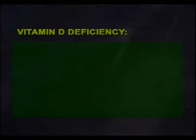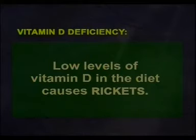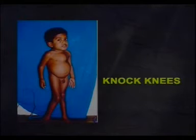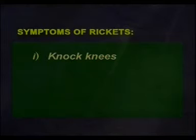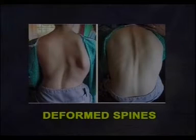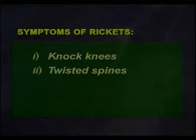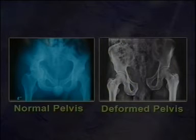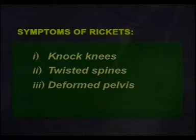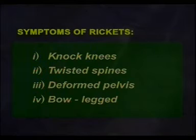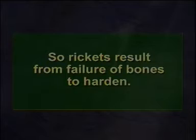Vitamin D deficiency. Low levels of vitamin D in the diet cause rickets. Symptoms of rickets include: one, knocked knees; two, twisted spine; three, deformed pelvis; four, bow-legged condition. Rickets results from the failure of bones to harden.